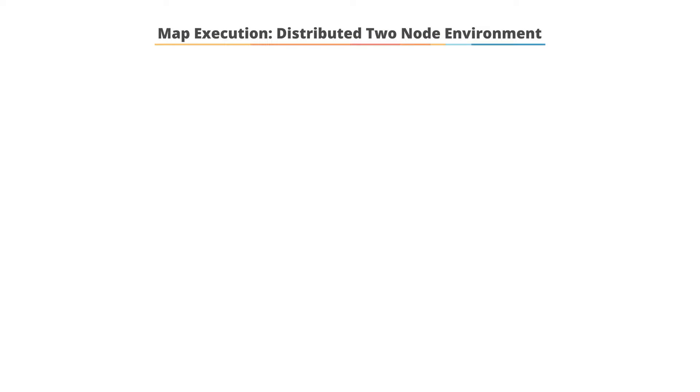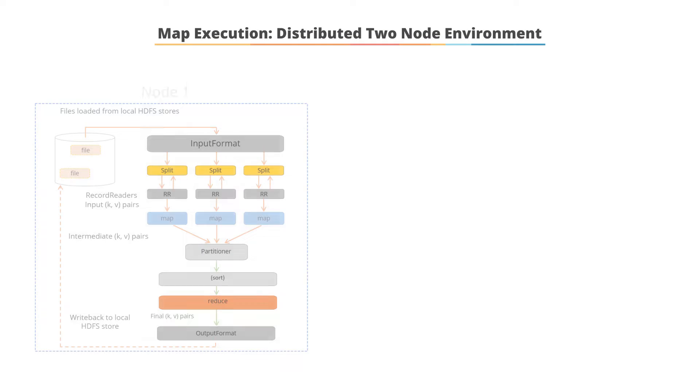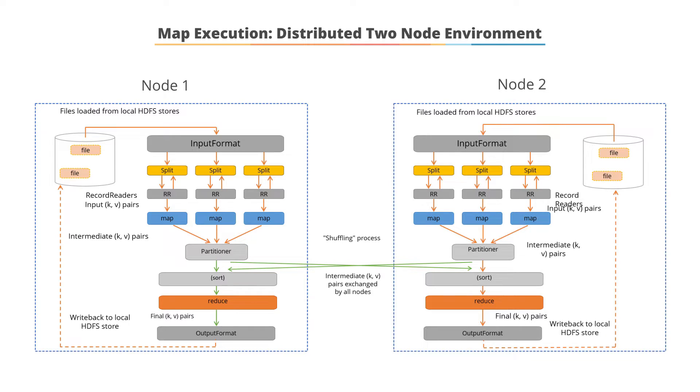Map execution in a distributed two-node environment. The mappers on each of the nodes are assigned to each input split. Based on the input format, the record reader reads the split as a key-value pair. The map function is applied to each record to then return zero or more new records. These intermediate outputs are stored in the local file system.